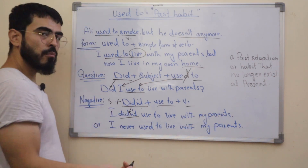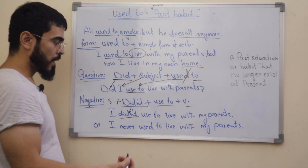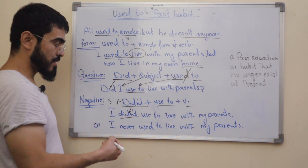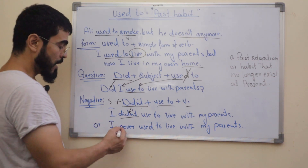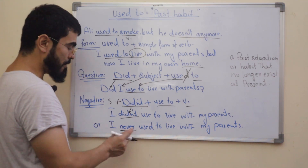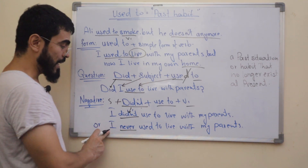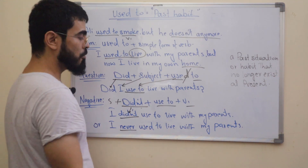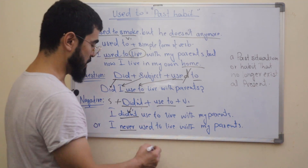There is one more way to make a negative sentence — by using 'never.' You can say: 'I never used to live with my parents.'